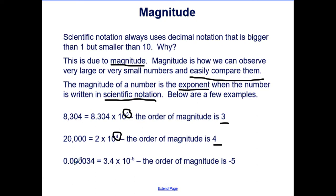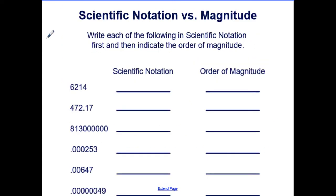Here we have 0.0000034, which in scientific notation is 3.4 times ten to the negative five. Since the exponent is negative five, the order of magnitude is negative five as well.